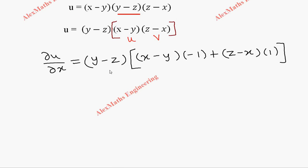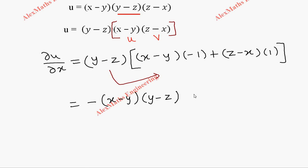Now the outside constant term we multiply with both terms. The first term gives a minus sign: minus (x minus y)(y minus z), then plus (z minus x)(y minus z). Let's keep this as the first equation.